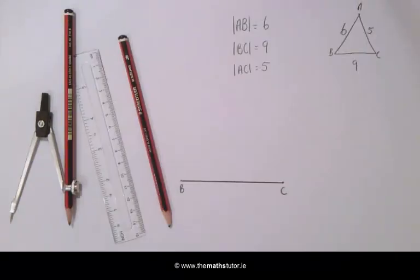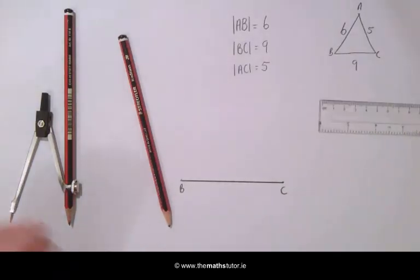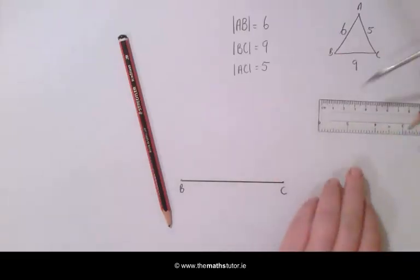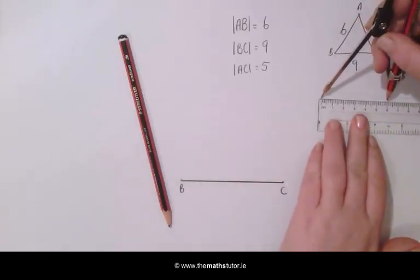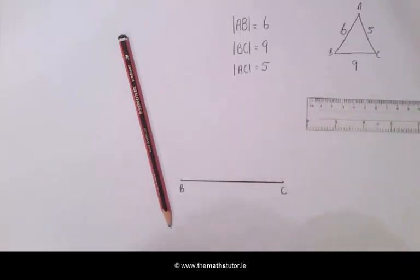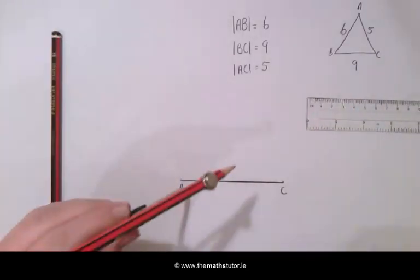Taking our compass and our ruler we are going to measure the second side which is 6 cm. Placing our compass at B we are going to draw an arc.